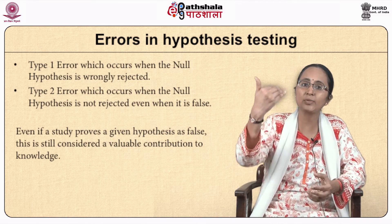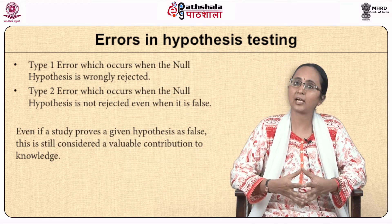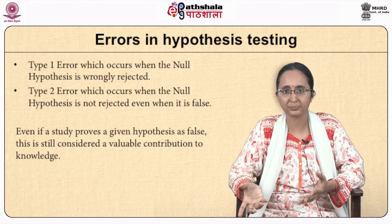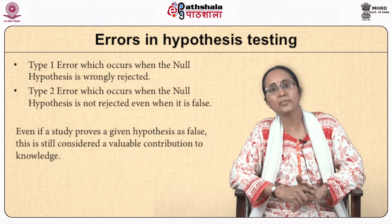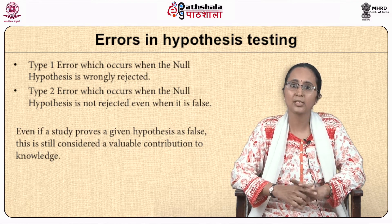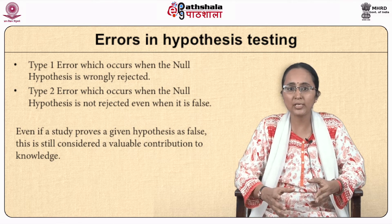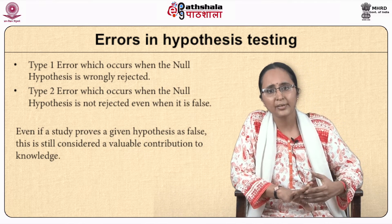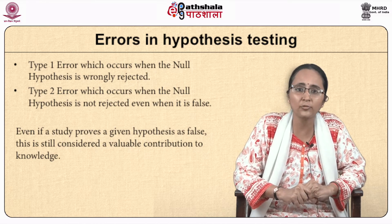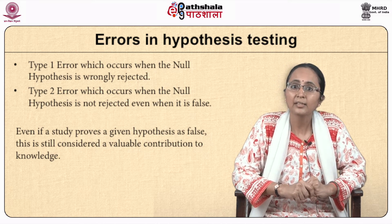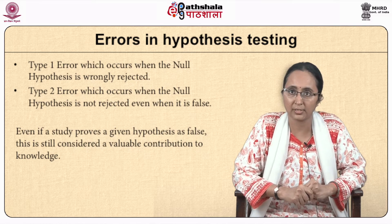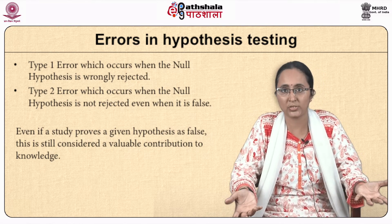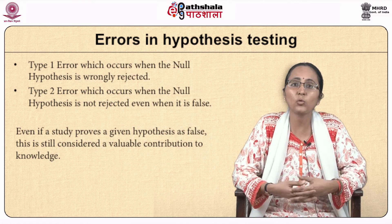There are two types of errors associated with hypothesis testing. Type 1 error occurs when the null hypothesis is wrongly rejected. In our earlier example, if the study result demonstrated that teacher training did not influence student performance, the null hypothesis cannot be rejected. If you still reject it, you are committing a Type 1 error.